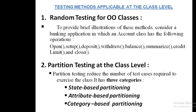Under testing methods applicable at the class level, the first point is random testing for object-oriented classes — that means, in object-oriented classes, how we can apply test strings randomly. To explain this, consider a banking application as an example in which an account class has the following operations: open, account setup, depositing some amount into the account.